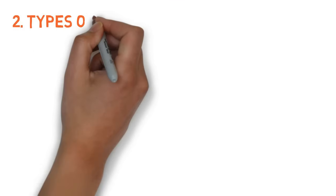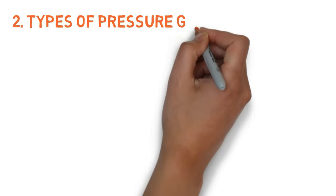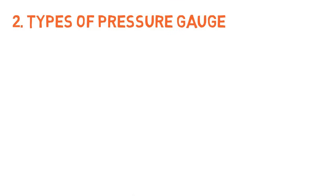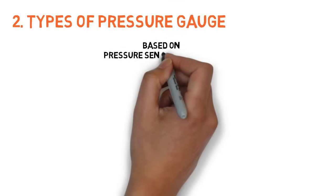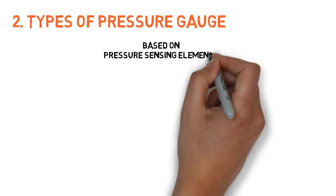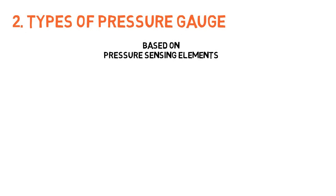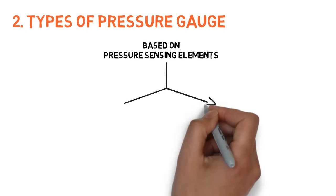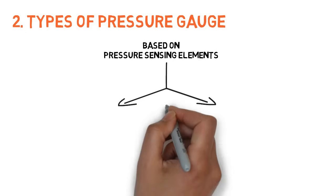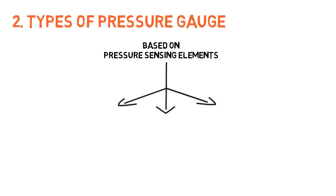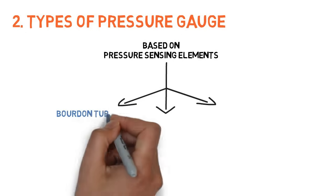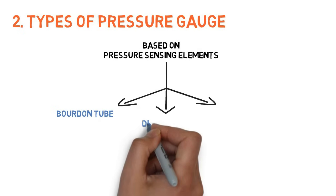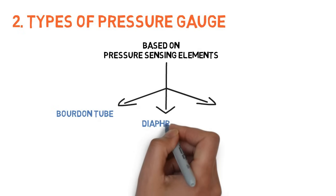There are different types of pressure gauges available. Pressure gauges are divided into three types based on pressure sensing elements. They are: Bourdon tube, diaphragm, and bellow.